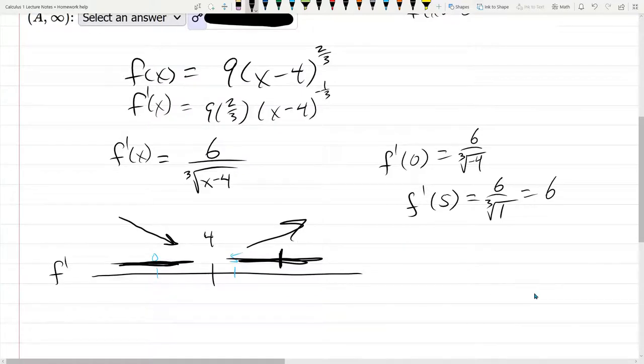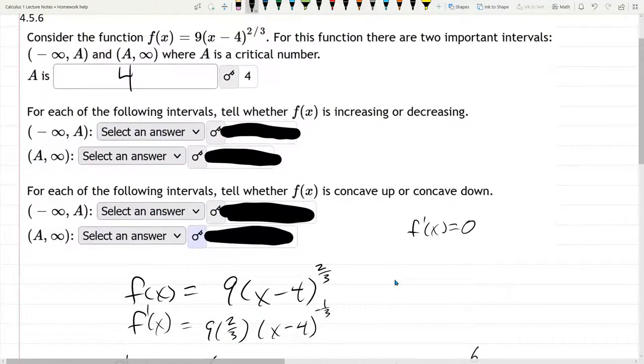So ready to answer, decreasing, increasing. So negative infinity to 4, decreasing, and 4 to positive infinity, increasing. And that should be, remember a is 4, so the first one is decreasing, then increasing.